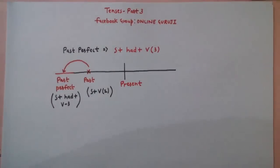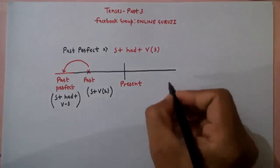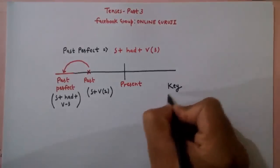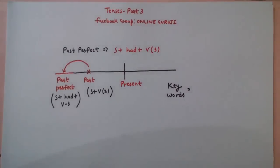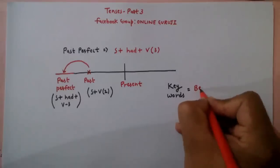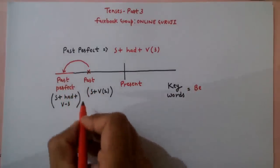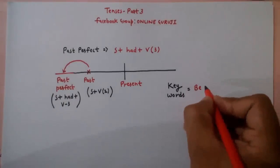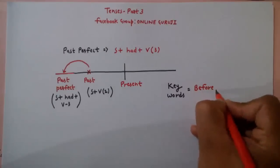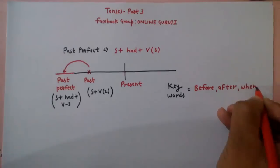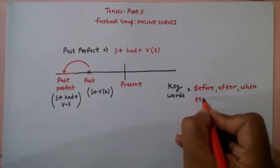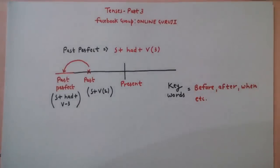Past Perfect में keywords कौन-कौन से use होते हैं? Keywords जो इस पे use होते हैं वो होते हैं — before, after और when. यही वो keywords हैं जो past और past perfect को जोड़ते हैं. यह सबसे important keywords हैं. चलो एक example लेते हैं, उससे ज्यादा clear हो जाएगा.